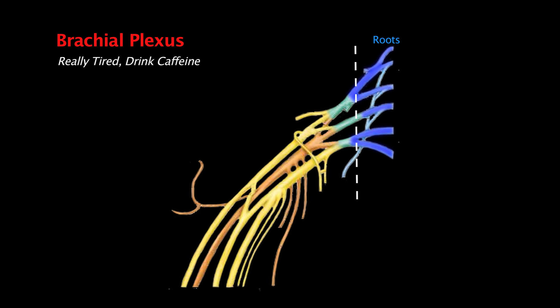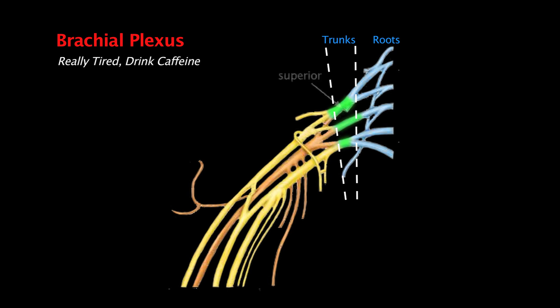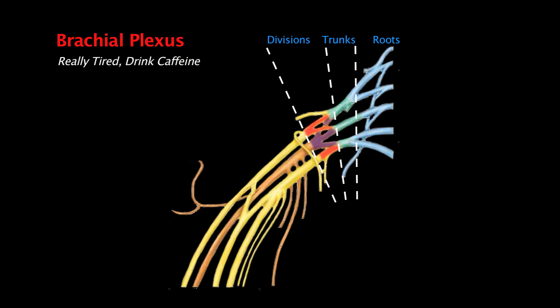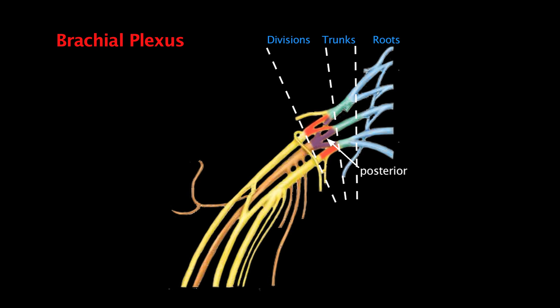The roots come from the anterior rami of spinal nerves C5, C6, C7, and C8 as well as T1, and as they emerge from the vertebral column they merge together to form the trunks. There are three trunks: the superior, the middle, and the inferior trunk. Each of the trunks then splits into two divisions — an anterior division and a posterior division — giving three anterior divisions and three posterior divisions. All three of the posterior divisions end up merging together, whereas only two of the anterior divisions merge together.